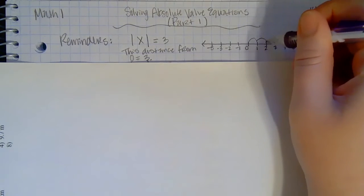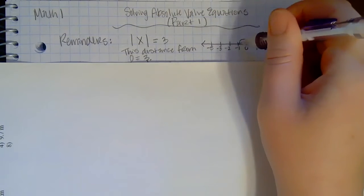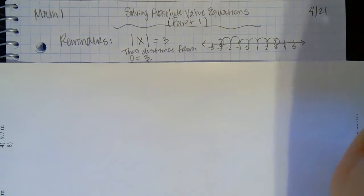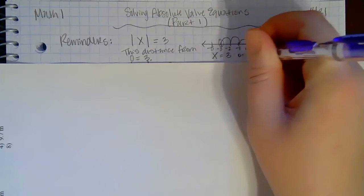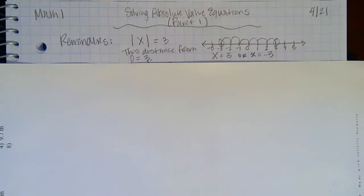Three to the right: 1, 2, 3. So that's one possible answer. Or 1, 2, 3 to the left. That's another possible answer. Okay, so then that's why for this one my solutions are x equals 3 or x equals negative 3. We did that yesterday.